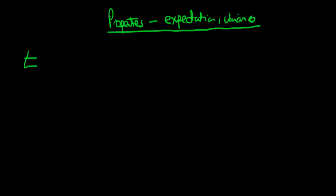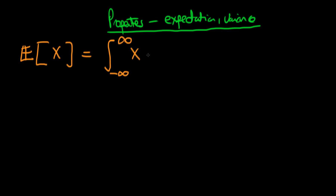Let's think about the expectation of a random variable x — let's do that in a different colour. The expectation of x, from the law of the unconscious statistician, is the integral from minus infinity to plus infinity of x times our probability density function f(x) integrated across all space. Now, if we want to find the expectation of a constant a times x, then a just enters the integral, and because a doesn't vary we can take it outside, leaving us with a times the expectation of x.